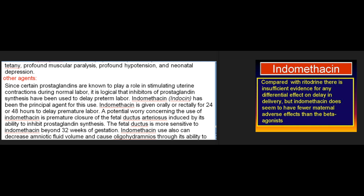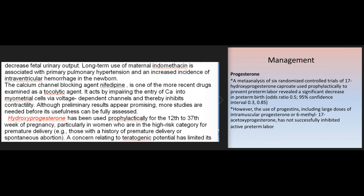Since certain prostaglandins are known to play a role in stimulating uterine contractions during normal labor, inhibitors of prostaglandin synthesis have been used to delay preterm labor. Indomethacin (Indocin) has been the principal agent for this use, given orally or rectally for 24 or 48 hours to delay premature labor. A potential concern is premature closure of the fetal ductus arteriosus induced by indomethacin's ability to inhibit prostaglandin synthesis; the fetal ductus is more sensitive to indomethacin beyond 32 weeks of gestation. Indomethacin use can also decrease amniotic fluid volume and cause oligohydramnios through its ability to decrease fetal urinary output. Long-term use is associated with primary pulmonary hypertension and an increased incidence of intraventricular hemorrhage in the newborn.